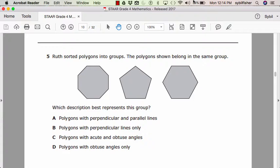Number 5. Ruth sorted polygons into groups. The polygons shown belong in the same group. Which description best represents this group? A, polygons with perpendicular and parallel lines. B, polygons with perpendicular lines only. C, polygons with acute and obtuse angles. D, polygons with obtuse angles only.